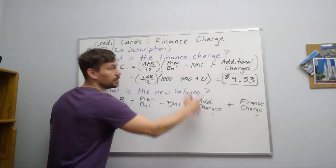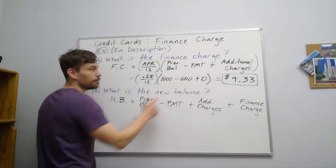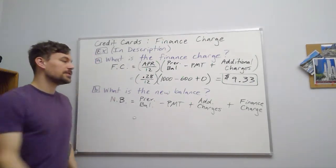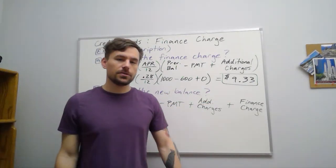So the first three terms look just like this: previous balance, minus payment, plus additional charges. And then we just say, we picked up a finance charge after that.